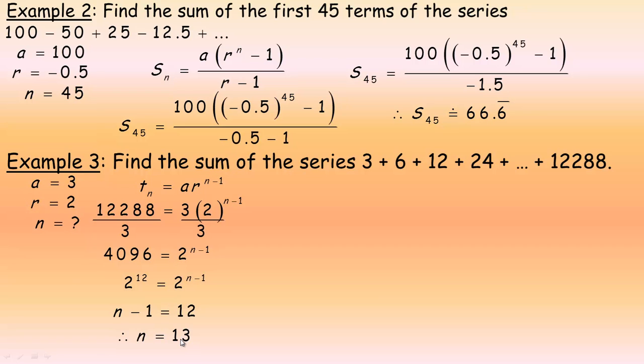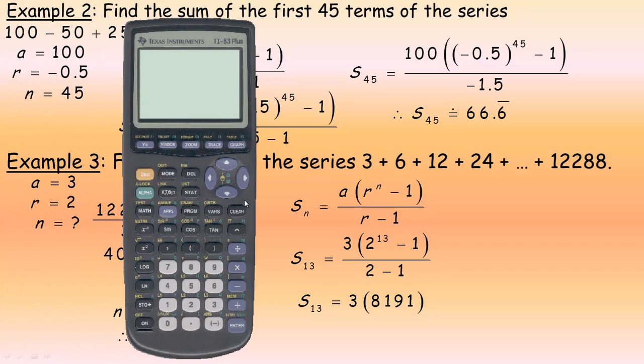So, now we can use the sum formula and we're finding S13. So, again, a is 3, common ratio is 2, n is 13, minus 1 over 2 minus 1 again. So, now, when you go to evaluate this, again, make sure you're following the order of operations. So, we will go 2 raised to the power of 13 and then subtract 1, of course. So, what's in here is 8191 and then we multiply that by 3. And we divide by 1.